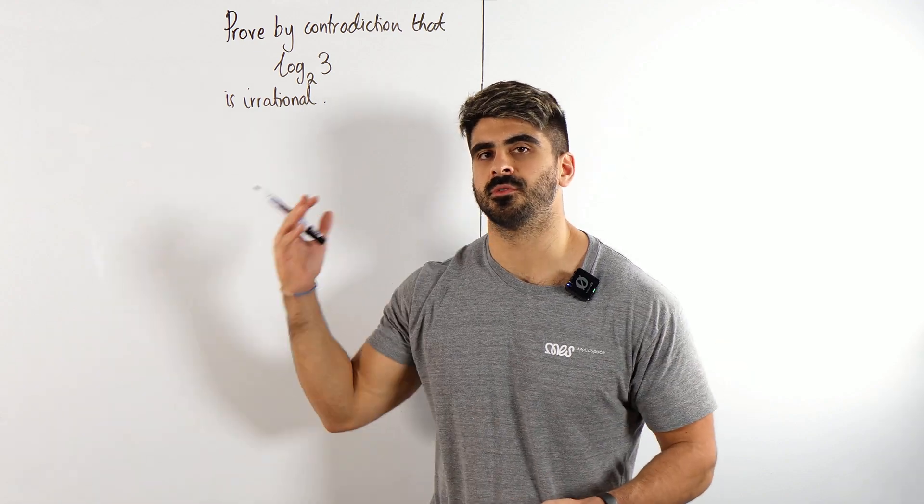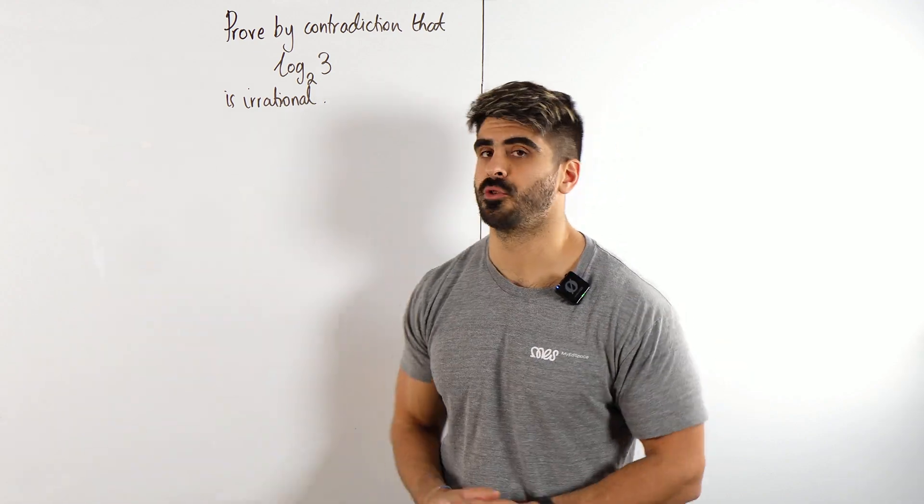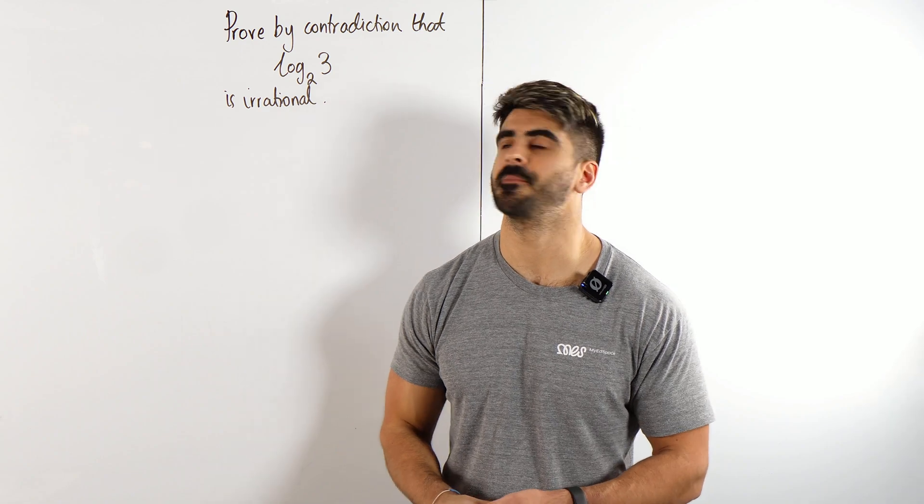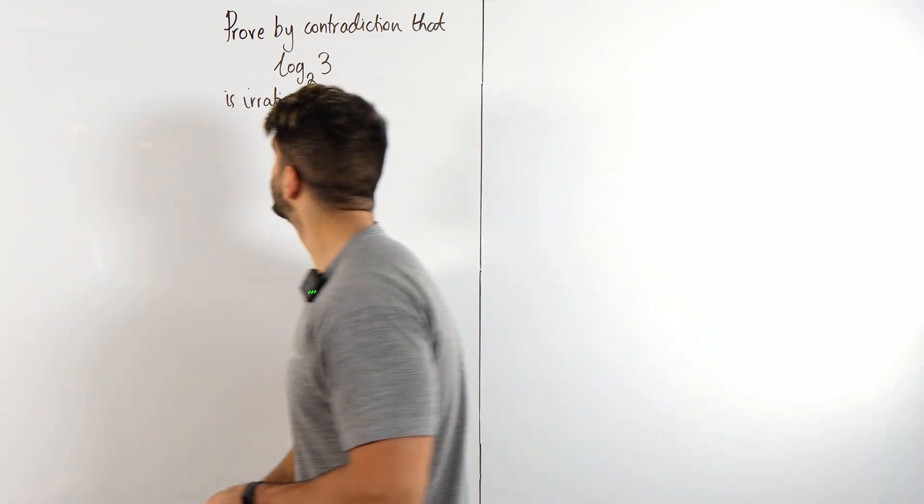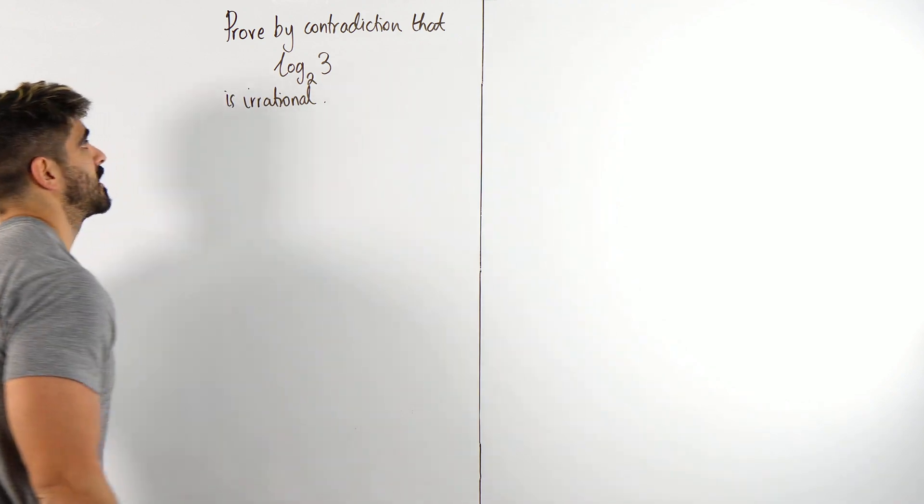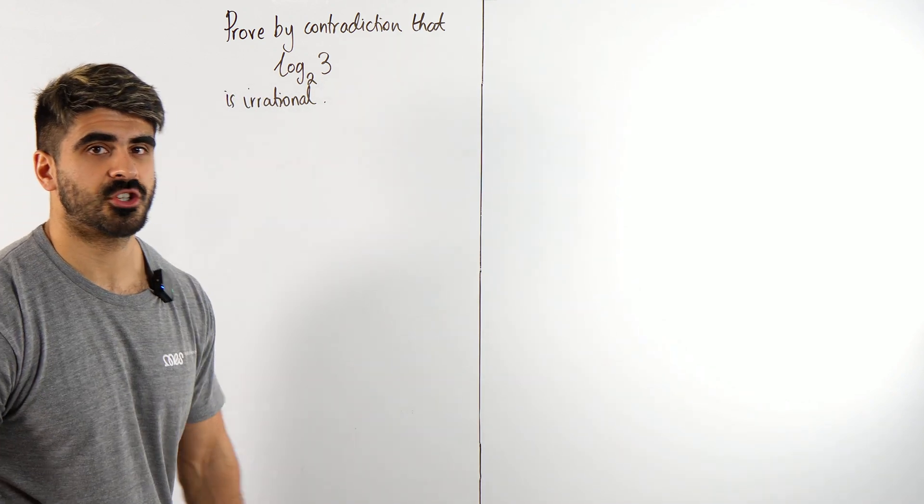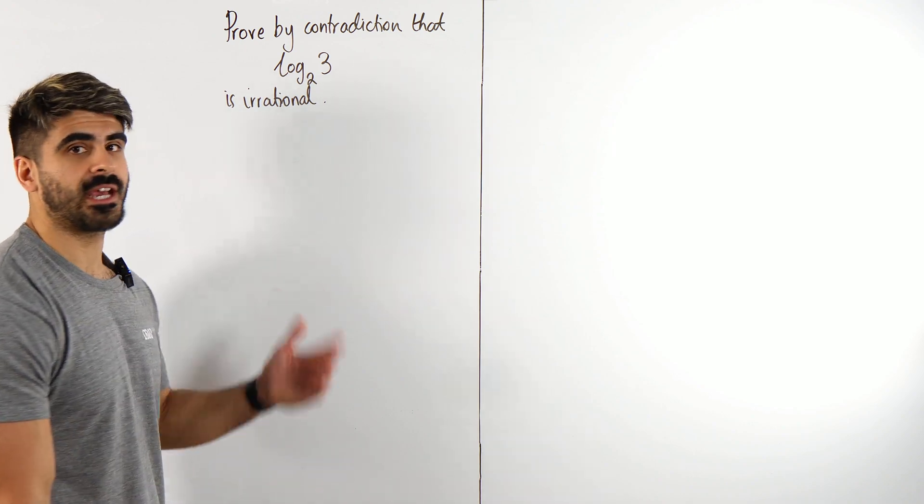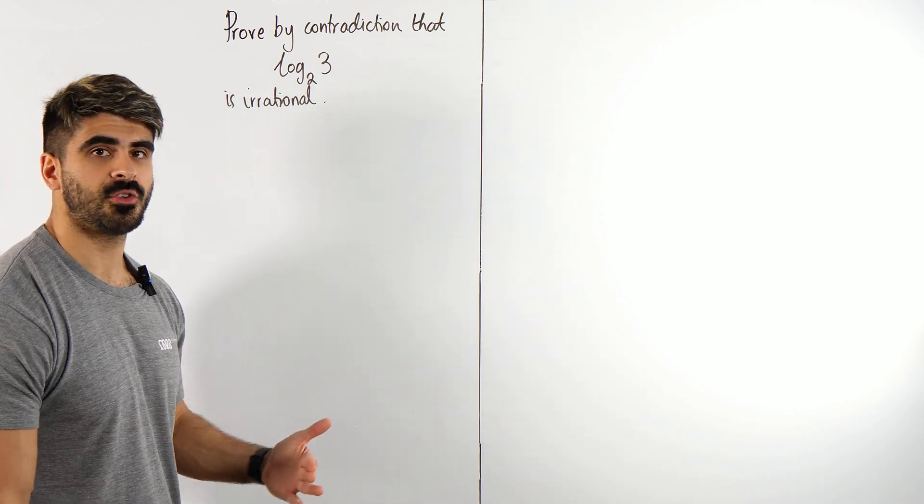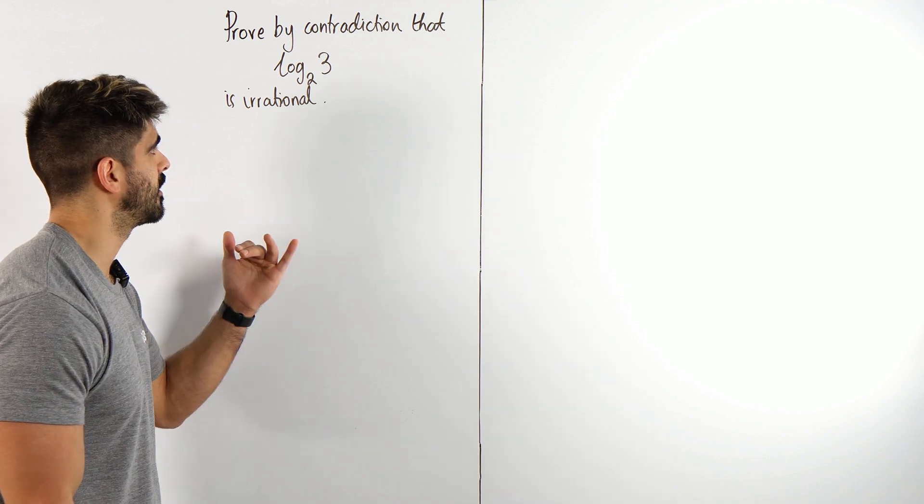Prove yourself. In order to do that, we need to learn how to do prove by contradiction. Prove that log base 2 of 3 is an irrational number, meaning we cannot write it as a fraction where the numerator and denominator are integers.